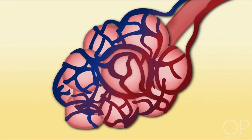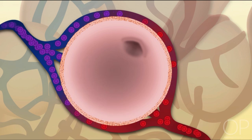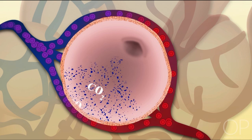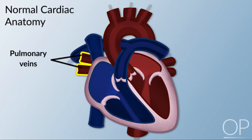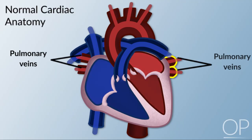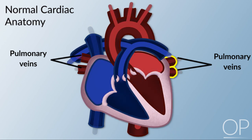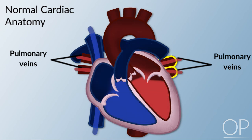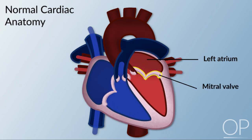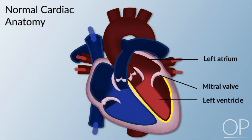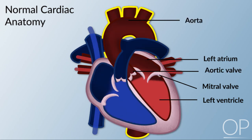The pulmonary arteries branch further into the pulmonary capillary bed where oxygen and carbon dioxide exchange occurs. The four pulmonary veins — two from the right lung and two from the left lung — carry oxygenated blood from the lungs to the left side of the heart. The oxygenated blood flows from the left atrium through the mitral valve and into the left ventricle, and out through the aortic valve into the aorta and to the body.